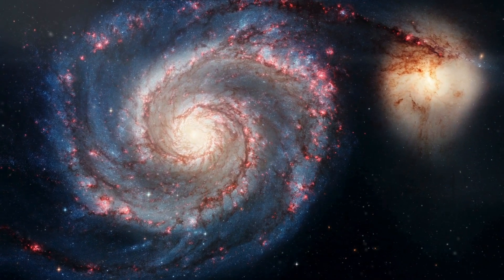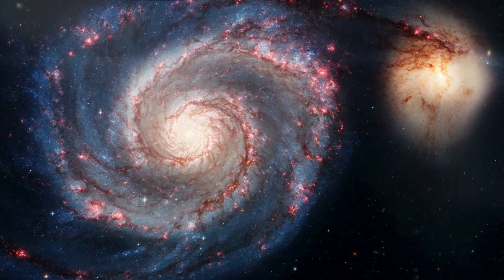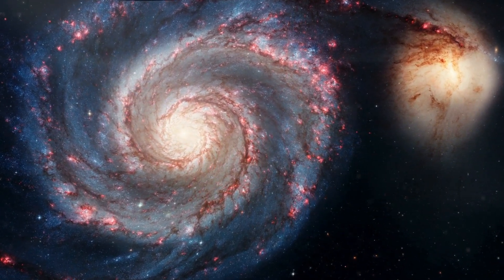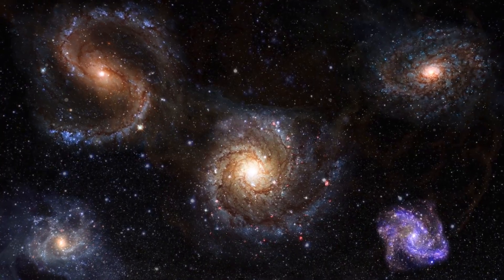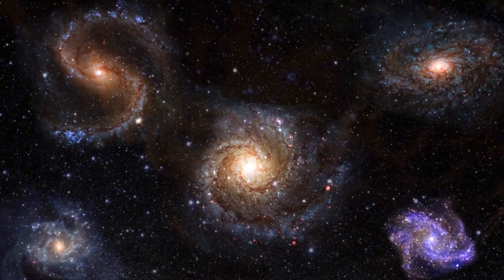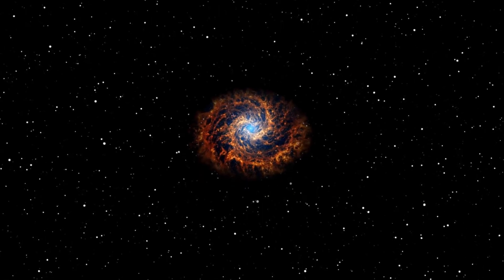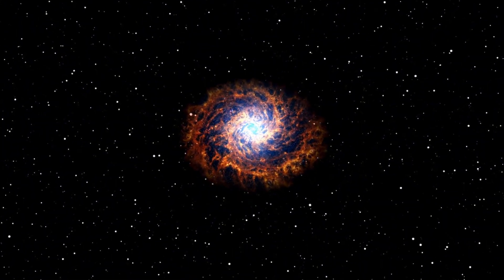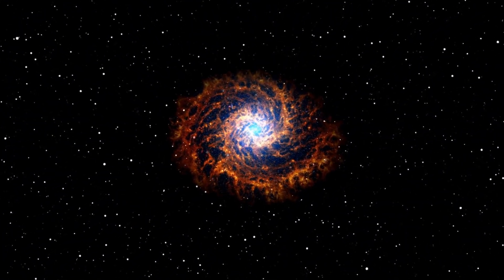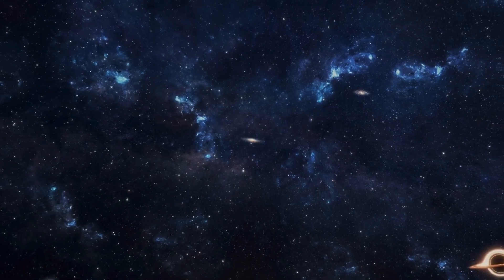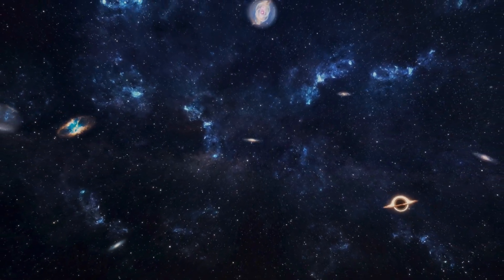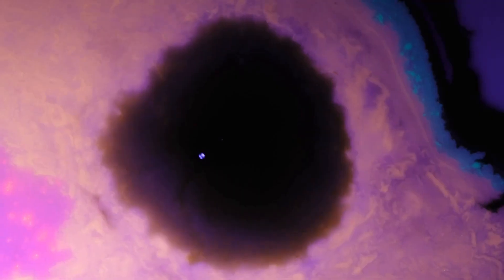Around two-thirds of the galaxies appeared to rotate clockwise, while only one-third rotated in the opposite direction. That's not what you'd expect in a random universe. In a truly random cosmos, the spin of galaxies should be evenly distributed, half one way, half the other. But the rotation bias suggests something else, an initial spin or momentum potentially inherited from the black hole that birthed our universe.